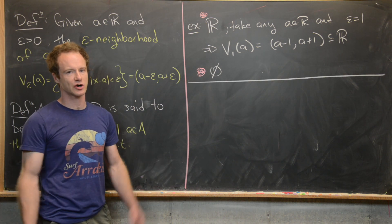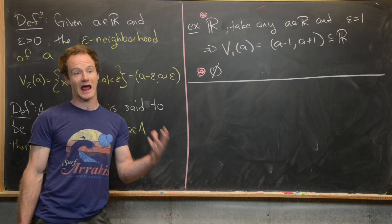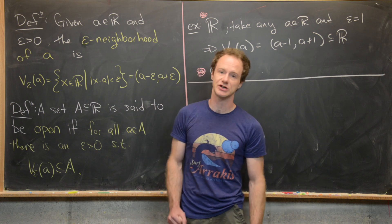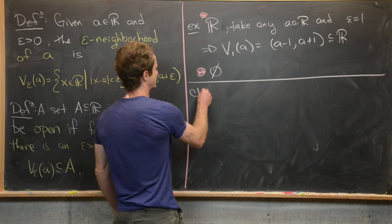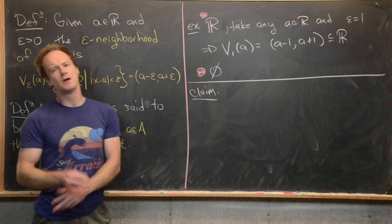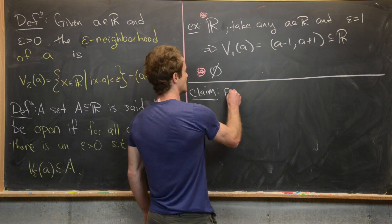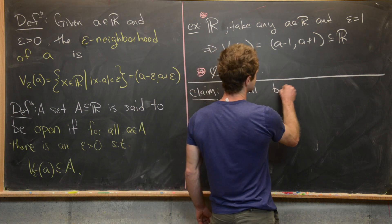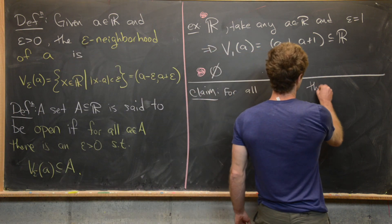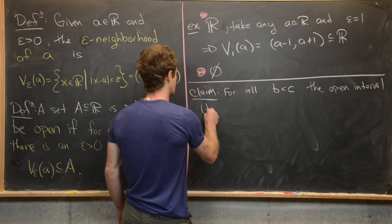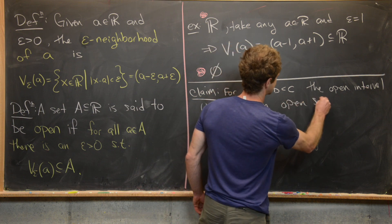Our third example will be an arbitrary open interval. It stands to reason that if we name something an open interval and define this notion of an open set, then an open interval should be a special type of open set. We'll actually prove this carefully. The claim is: for all real numbers b and c with b strictly less than c, the open interval (b, c) is an open set.